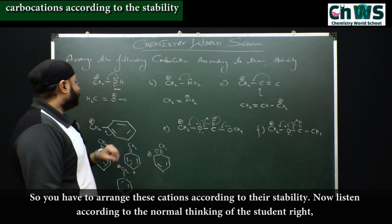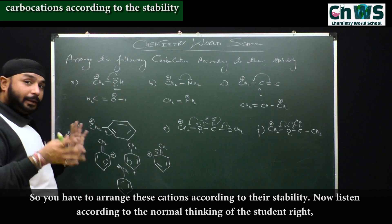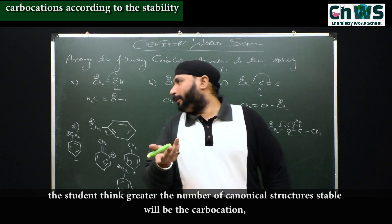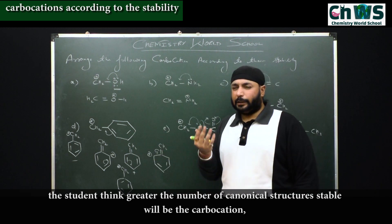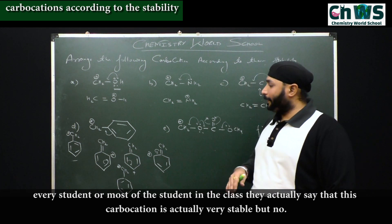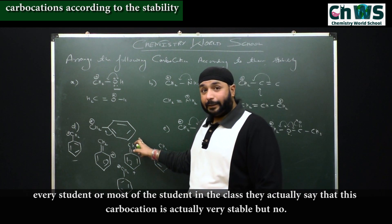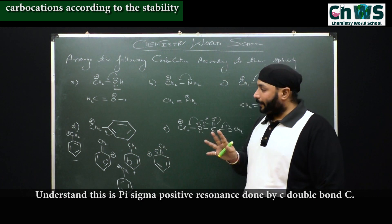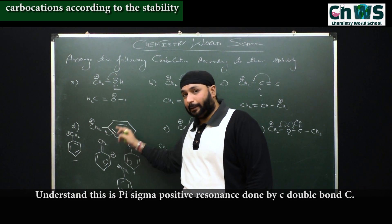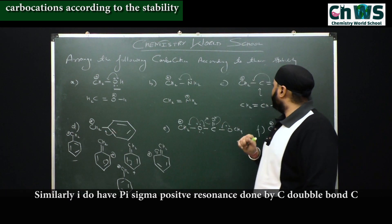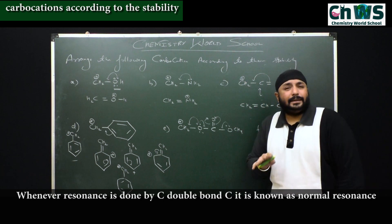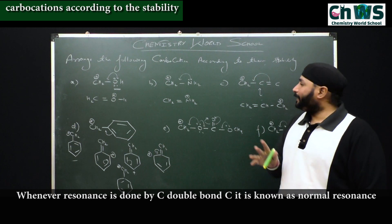Now according to the normal thinking of the student: greater the number of canonical structures, more stable the carbocation. Most students simply say that the carbocation with the most canonical structures is the most stable — but no. Understand: this is pi sigma positive, resonance done by C=C. This is resonance done by C=C.